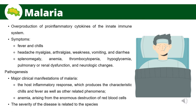As for pathogenesis, the major clinical manifestations of malaria include, first, the host-inflammatory response, which produces characteristic chills and fever. Second, anemia, which arises from the enormous destruction of red blood cells. The severity of the disease is related to the species. Infections caused by Plasmodium falciparum are most likely to progress to severe, potentially fatal forms with central nervous system involvement, acute renal failure, severe anemia, or acute respiratory distress syndrome.